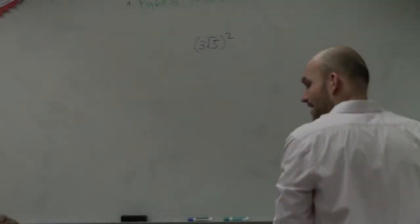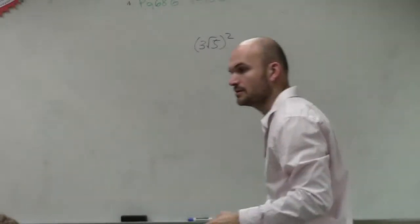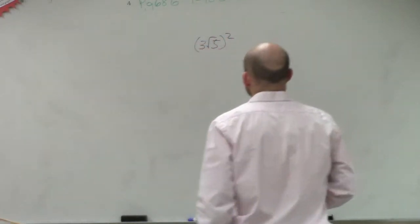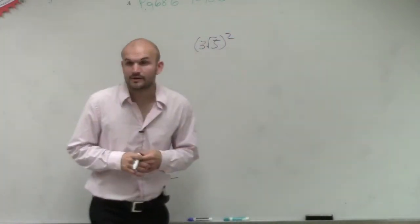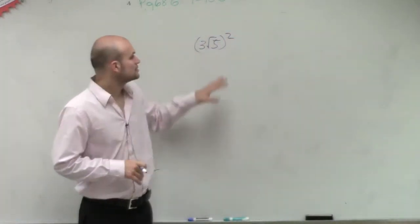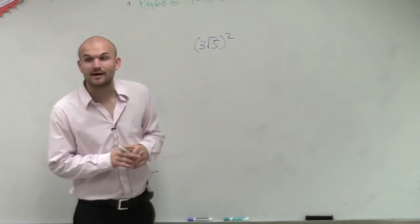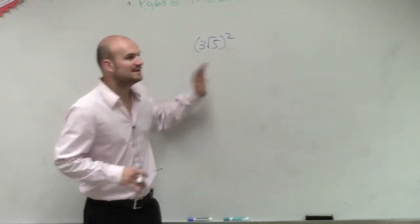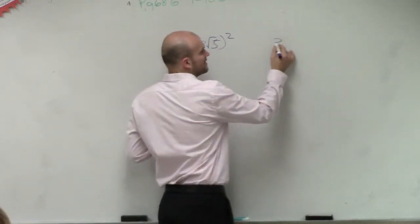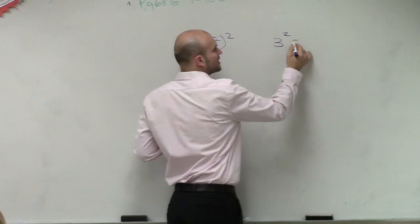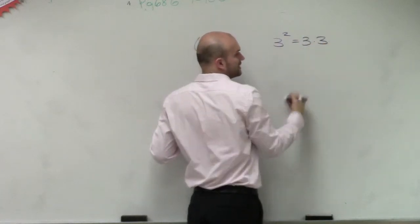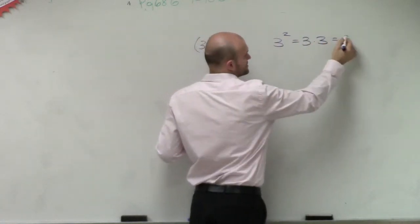What we have here is 3 times the square root of 5. So you have 3 times the square root of 5, squared. We need to remember what squaring means. If I say 3 squared, that means 3 times 3, which we know the answer is 9.